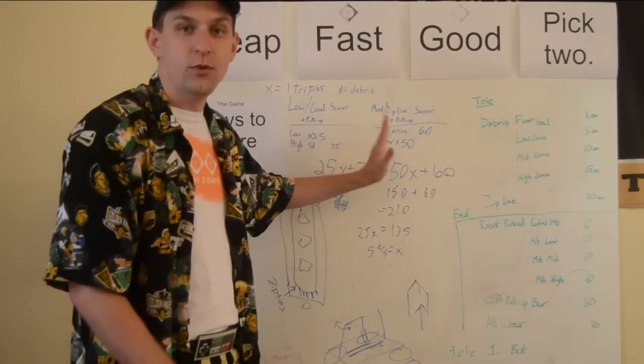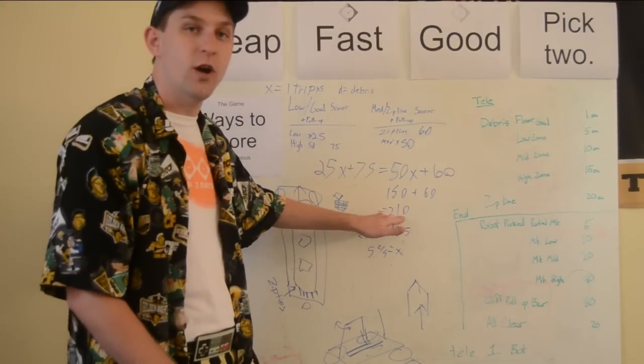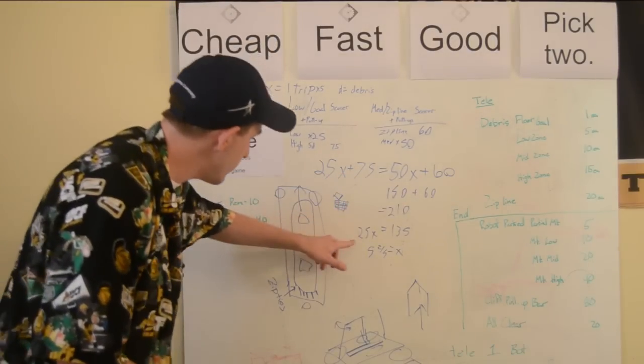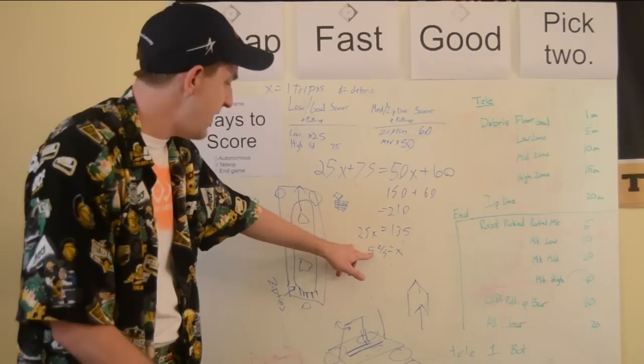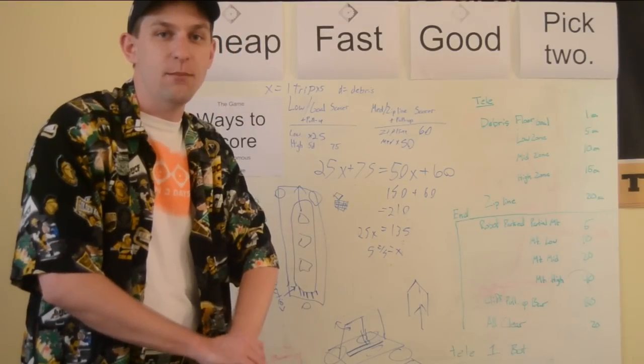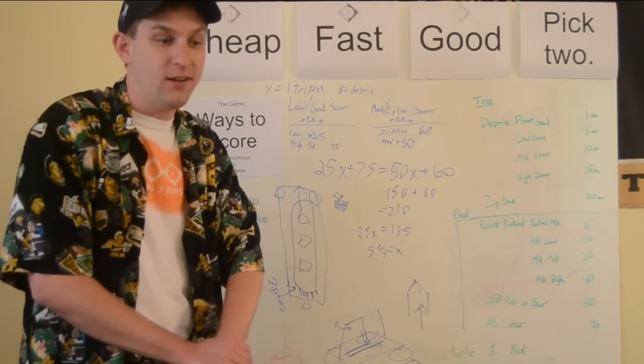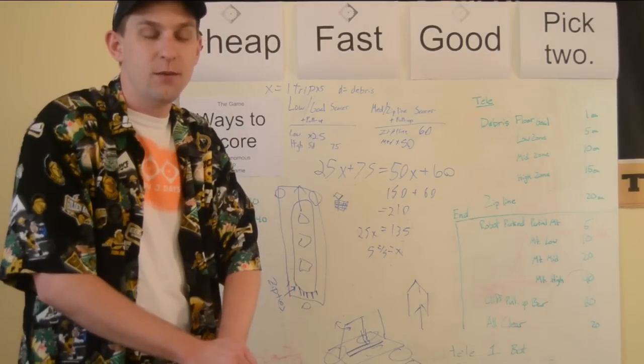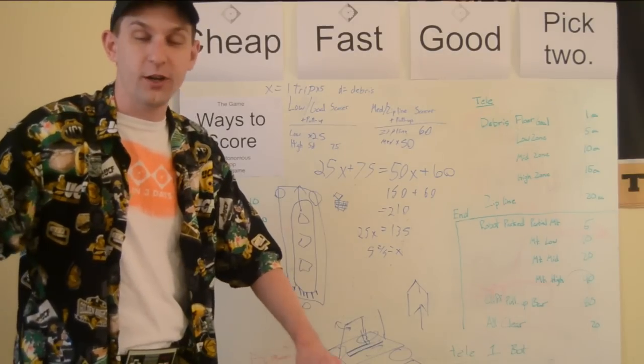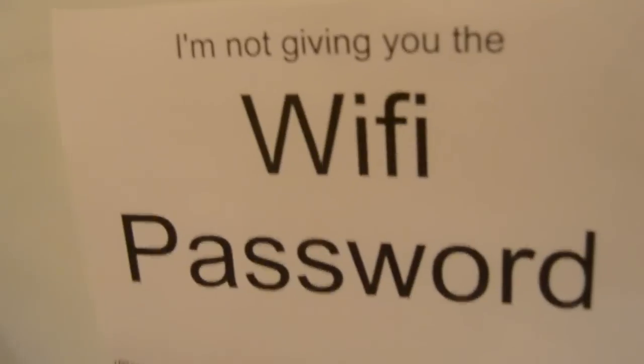How many times do we have to go to the low goal in the other robot to get the same 210 points? Doing a little bit of math, we come down to five and two-fifths trips to the low goal to get the same number of points. Our concern with this is that we don't think if you go to the low goal that many times, it's going to be full. So that last dump, all your balls or debris are going to scatter across the field, and you're not going to get any more points for doing so.